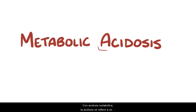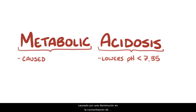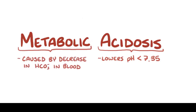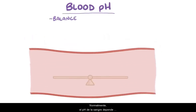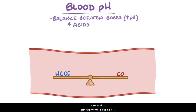With metabolic acidosis, acidosis refers to a process that lowers blood pH below 7.35, and metabolic refers to the fact that it's a problem caused by a decrease in the bicarbonate concentration in the blood. Normally, blood pH depends on the balance or ratio between the concentration of bases, mainly bicarbonate or HCO3-, which increases the pH, and acids, mainly carbon dioxide or CO2, which decreases the pH.